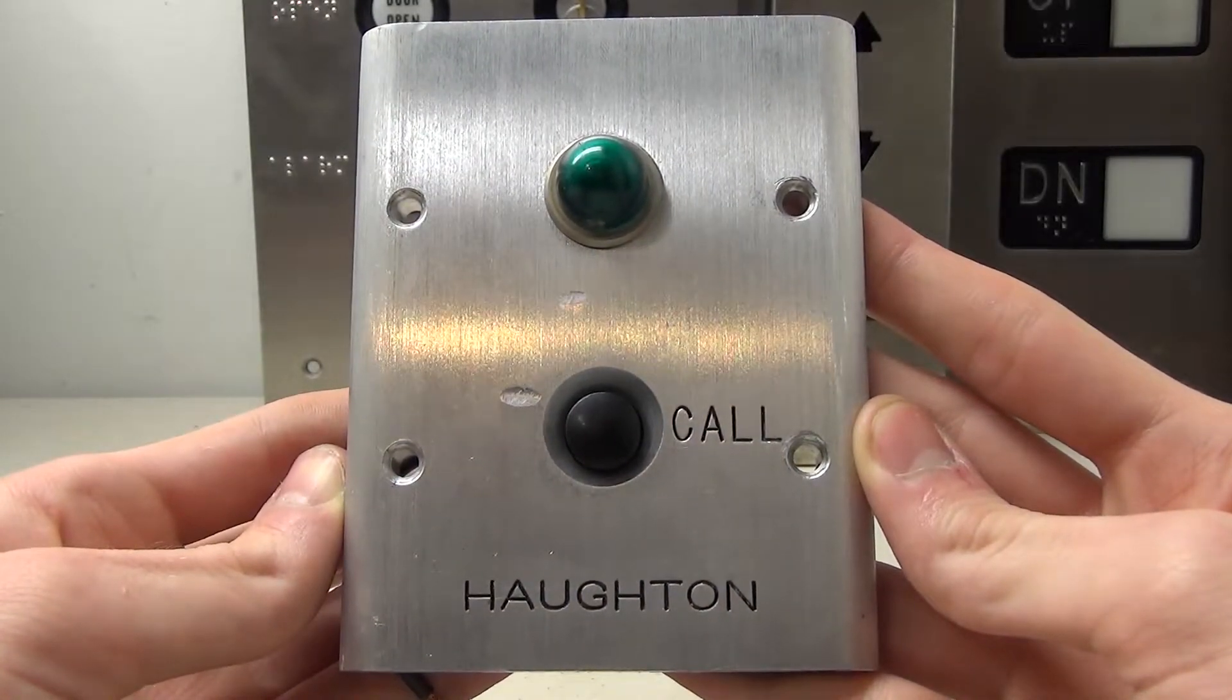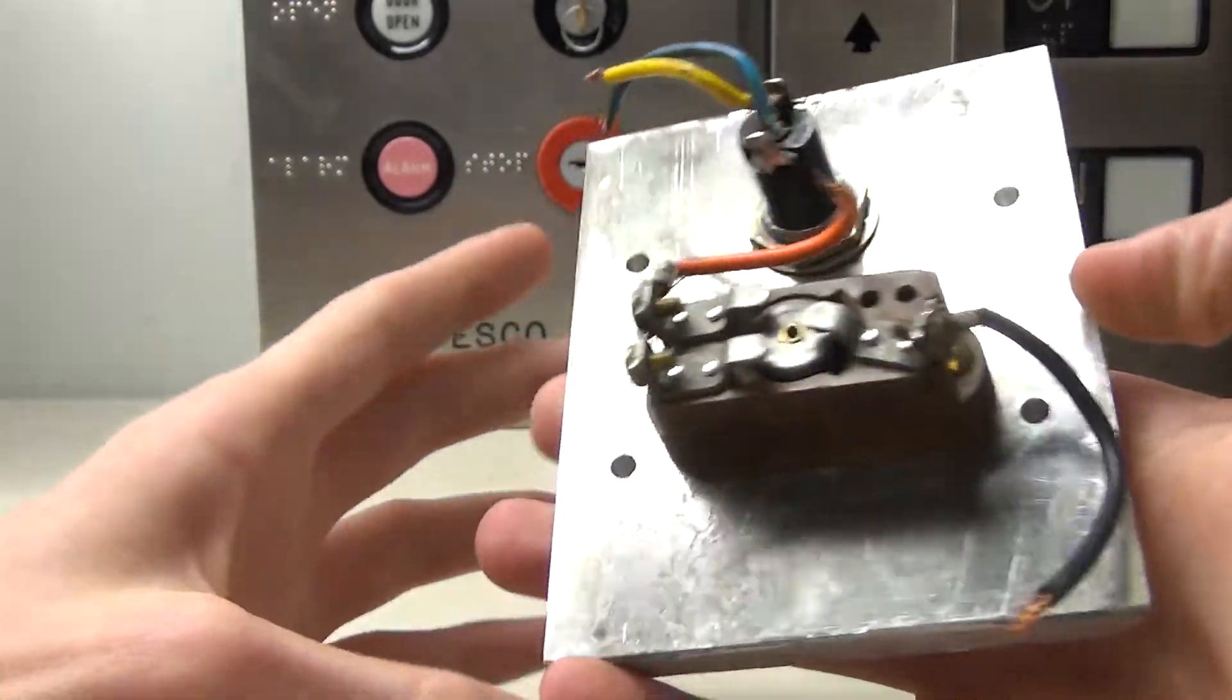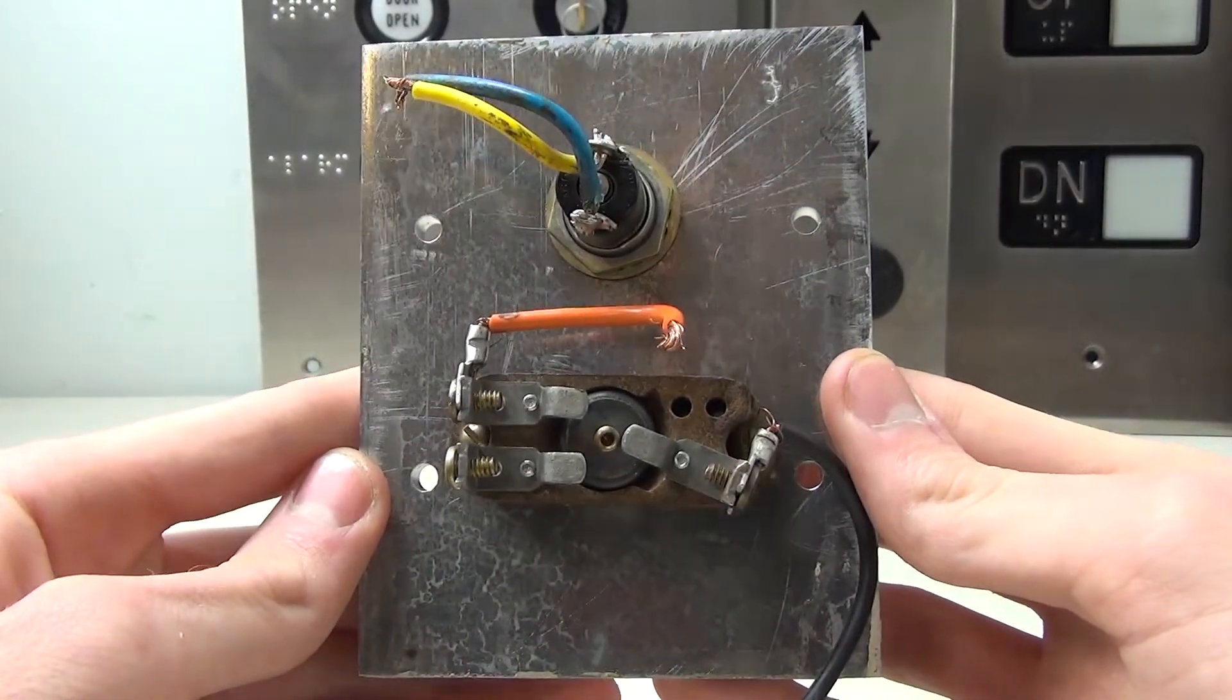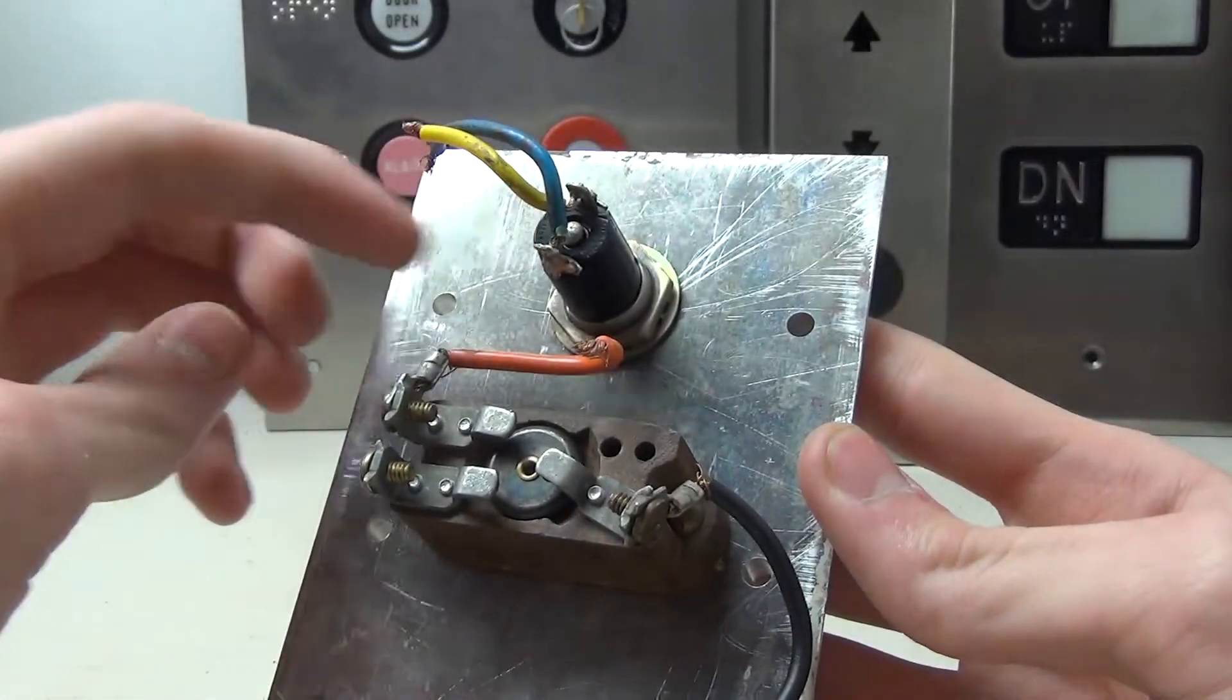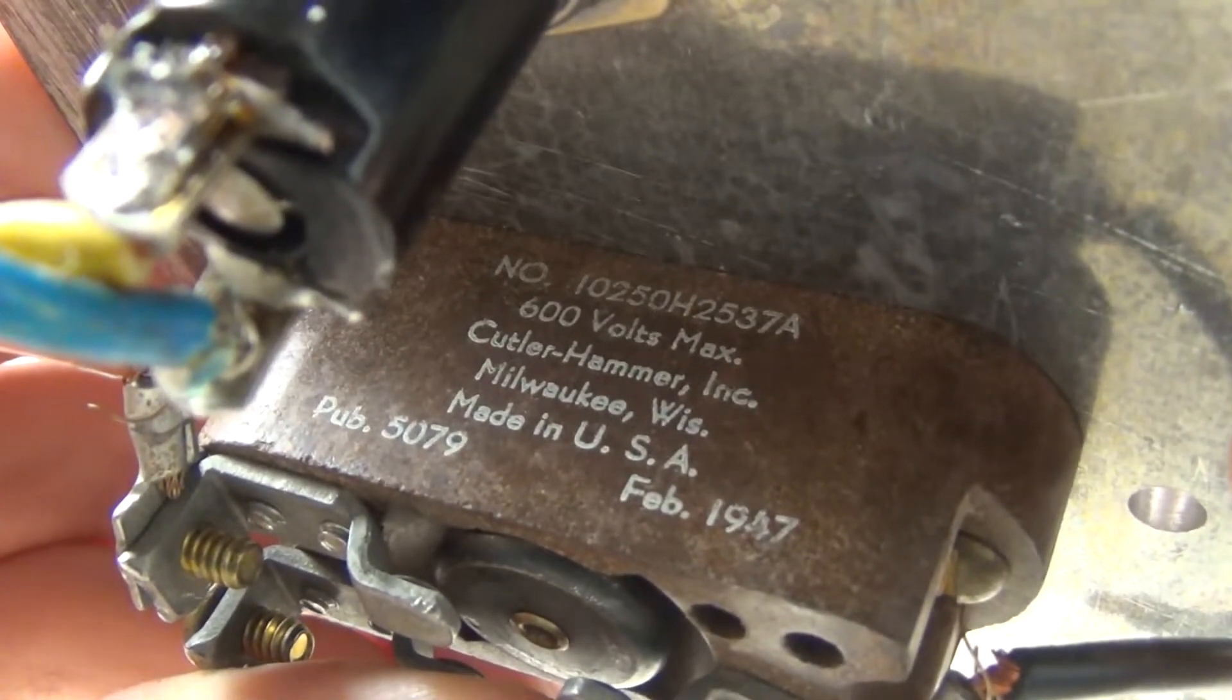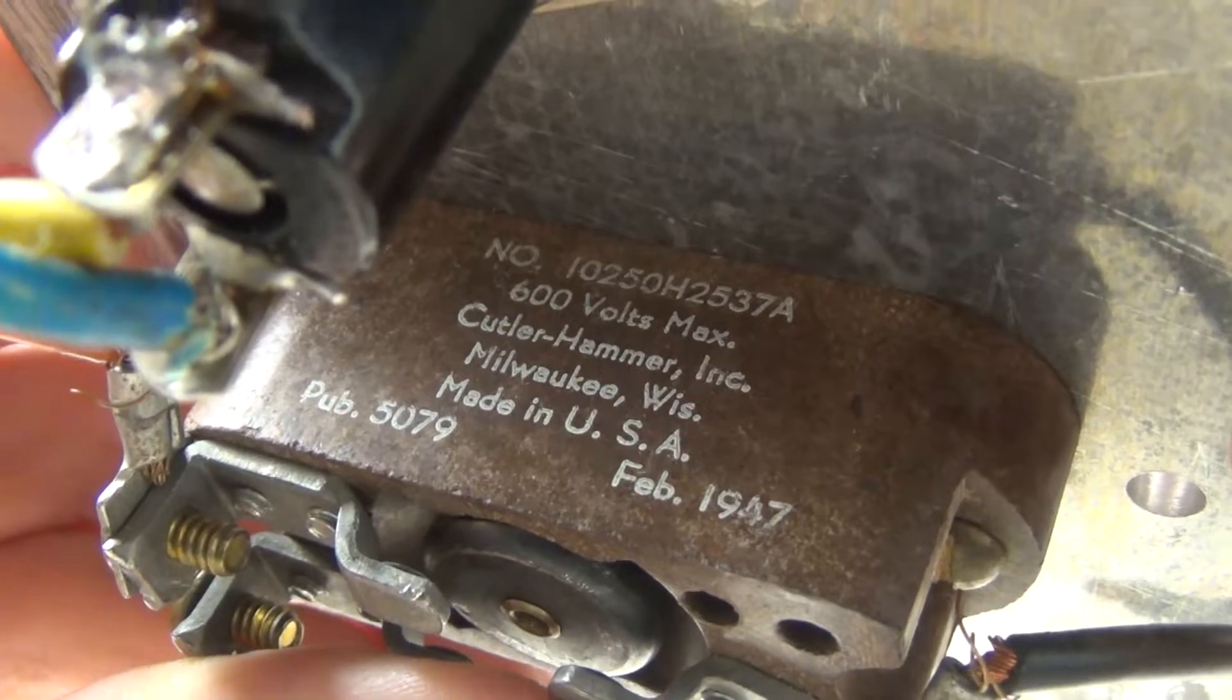Now let's go ahead and turn this thing over and take a look at the back. If we take a look at the back, it's very simple. There's only two parts to this: we have the button and the little lamp socket. You can see the button is a Cutler Hammer from Milwaukee, Wisconsin.